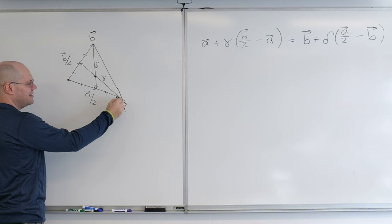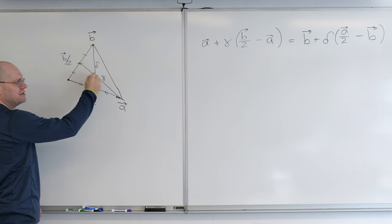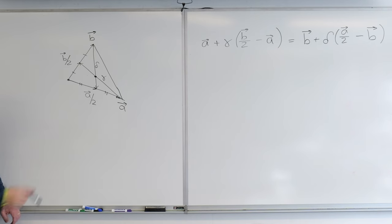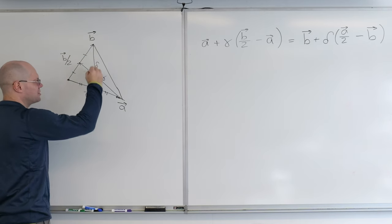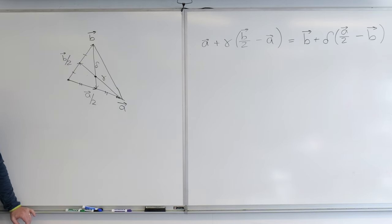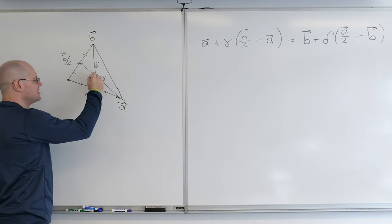And so we can arrive at that point in two different ways. First, go to A, and then a certain amount along this direction. This direction is B over 2 minus A. Or we can go to B and then a certain fraction of A over 2 minus B, which is exactly what I have written down. And the two are equal because they both meet at this point. Both paths.